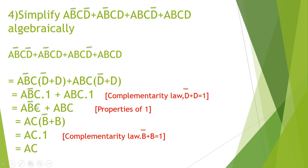Now in AB̄C plus ABC, which is the common factor? A and C are both common, so AC is common. Taking AC outside gives AC into B̄ plus B. By complementarity law, B̄ plus B equals 1. So this equals AC dot 1, and by properties of 1, AC dot 1 equals AC. Therefore the simplified result is AC.